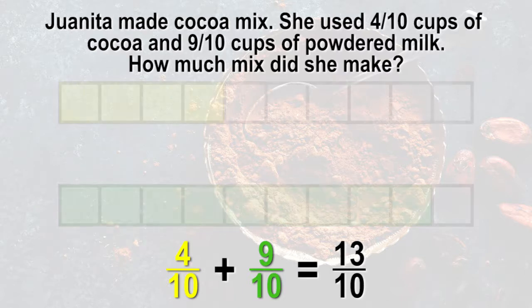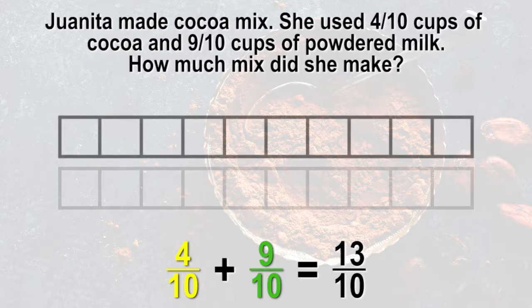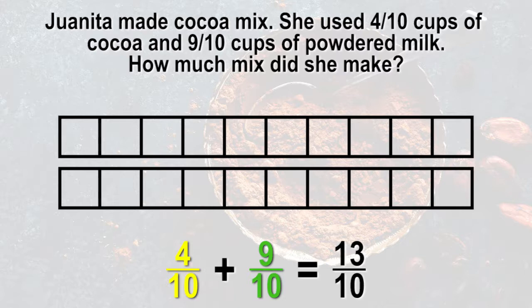To solve, let's use an area model. We know from our estimation that it will be greater than 1, so we will create 2 rectangles and divide each of them into 10 sections. Juanita used 4 tenths of a cup of cocoa, so let's color in 4 sections of the first rectangle.